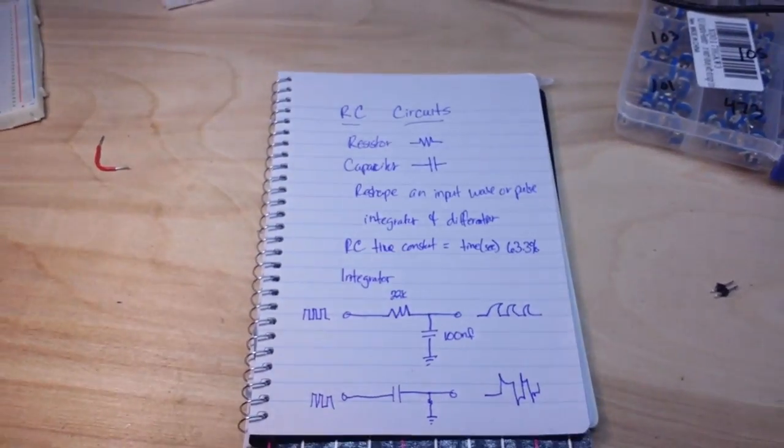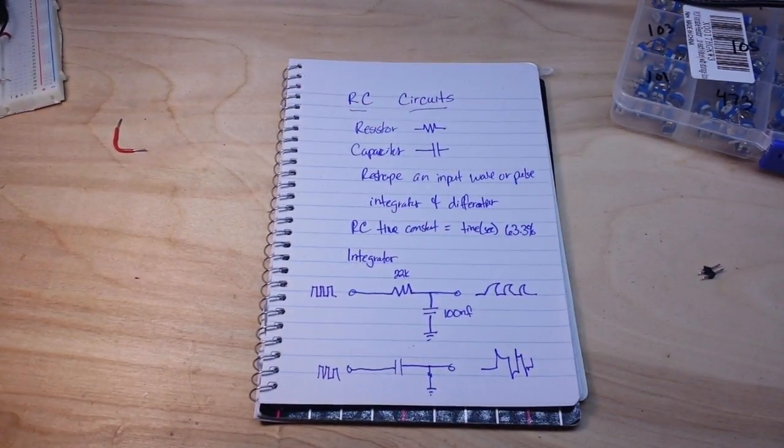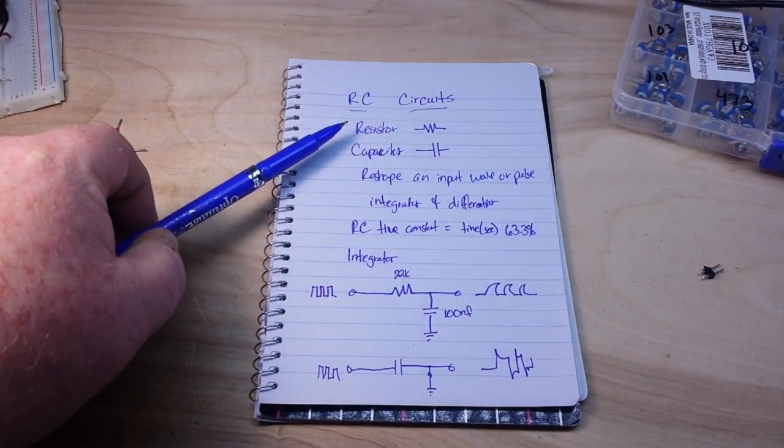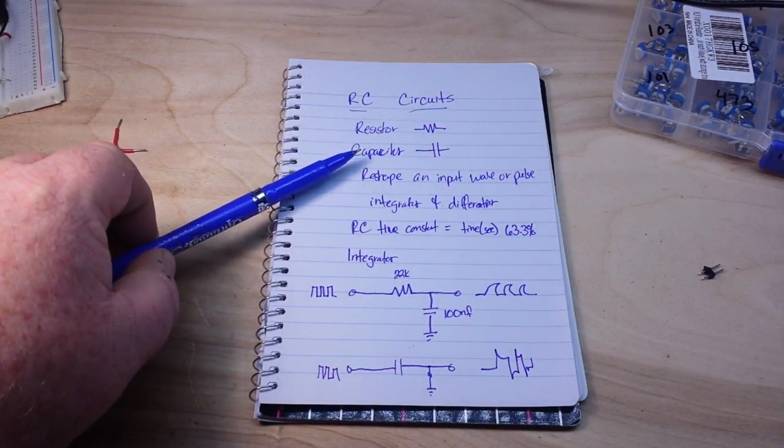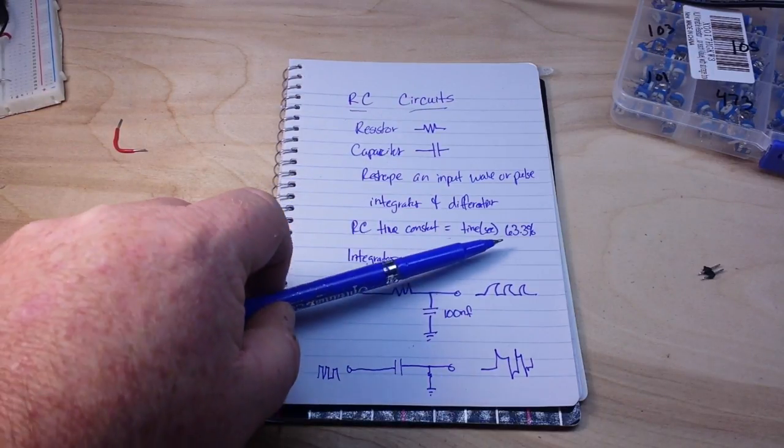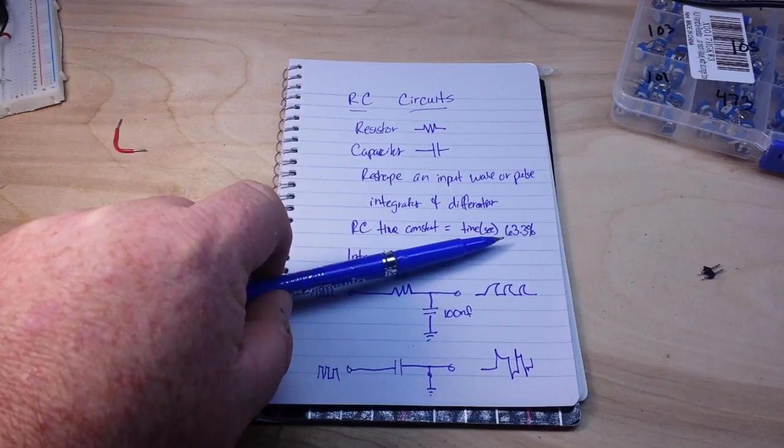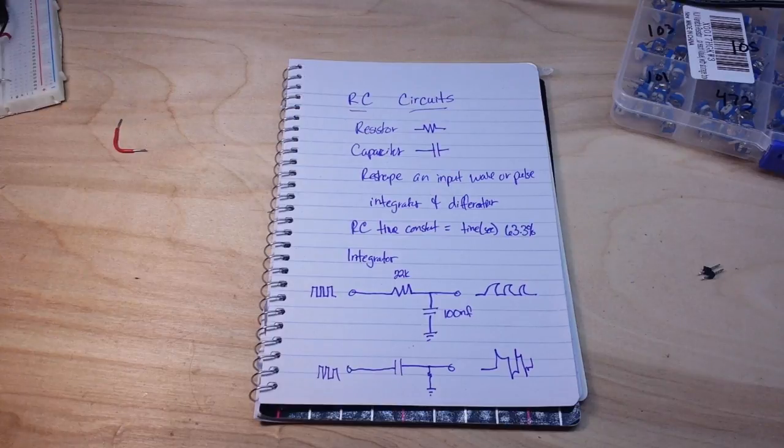We can sum everything up by saying that an RC circuit is a circuit that contains a resistor and a capacitor. The RC time constant is the time in seconds it takes for the capacitor to change, either charging or discharging, 63.3% of its value.